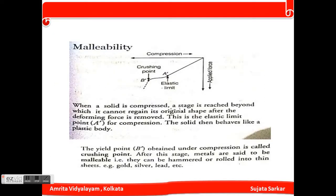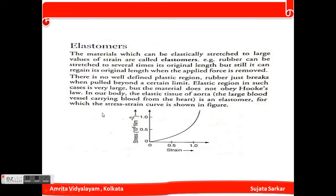Next is malleability. When a solid is compressed, a stress is reached beyond which it cannot regain its original shape after the deforming force is removed — this is called the elastic limit for compression, or the crushing point. After this stage, the metal behaves like a plastic body. The yield point obtained under compression is called the crushing point, and after this stage the metal is said to be malleable. Such metals can be hammered or rolled into thin sheets — examples include gold, silver, and lead.